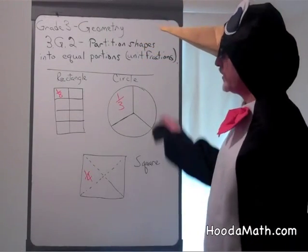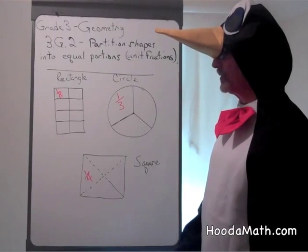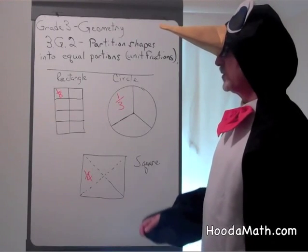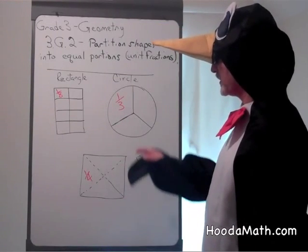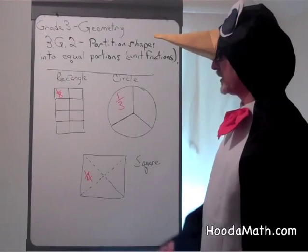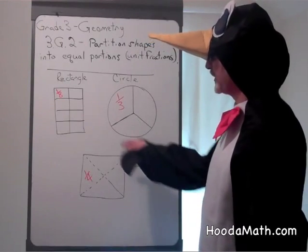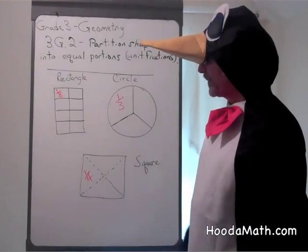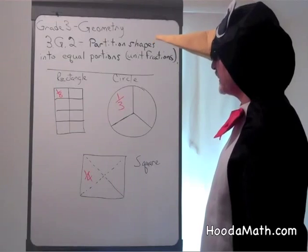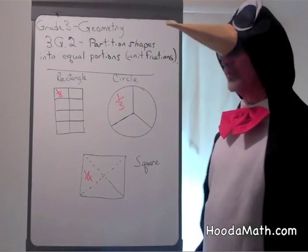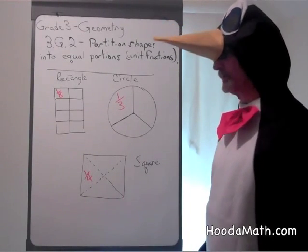So when you divide any shape that is regular — meaning that opposite sides are equal, or like a circle — you can divide it easily and find the unit fraction of each of the portions.